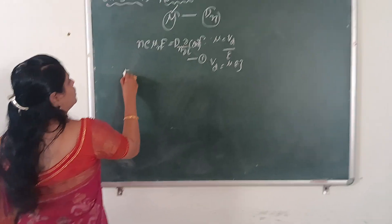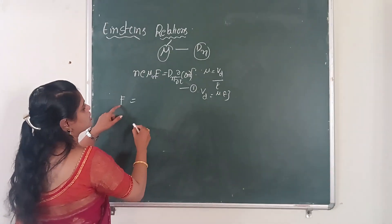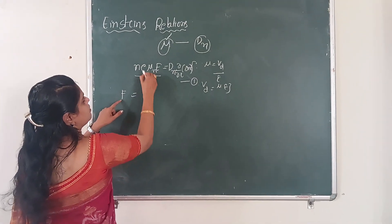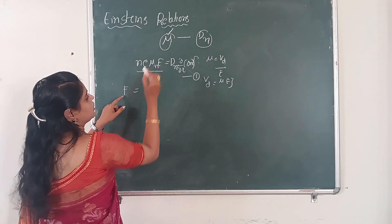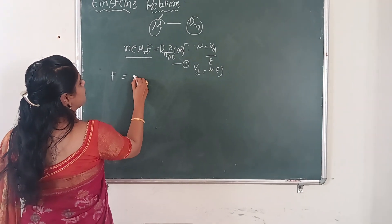So here, the force F equals to NeV mu n into capital E. So how can you rewrite this equation?